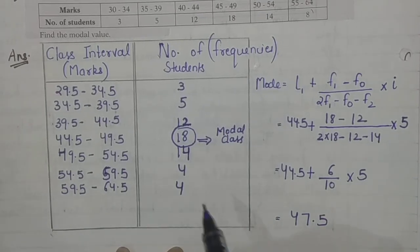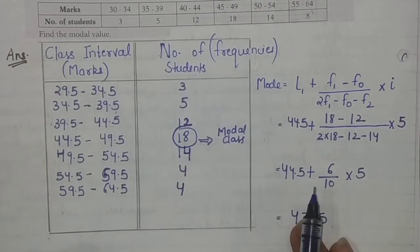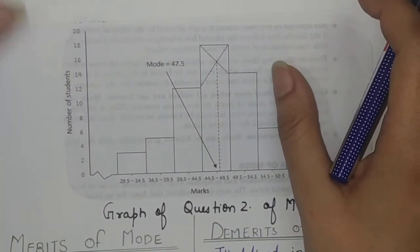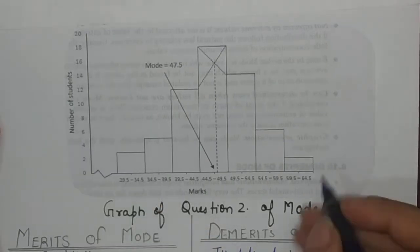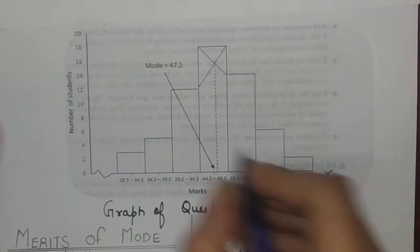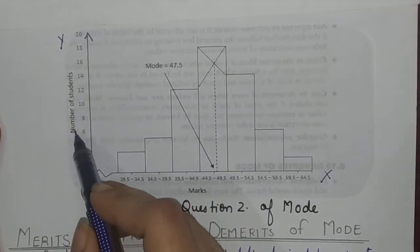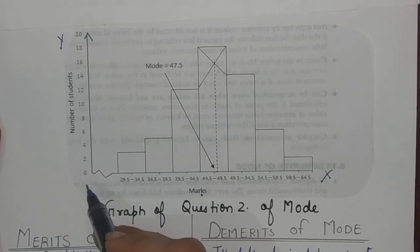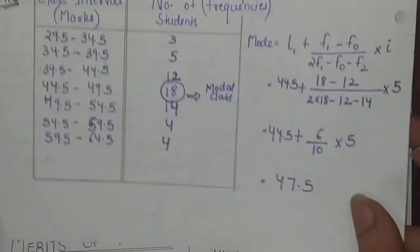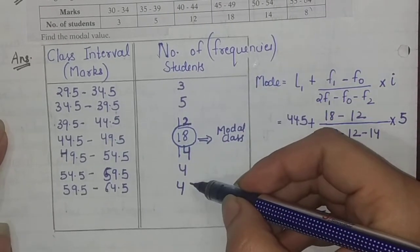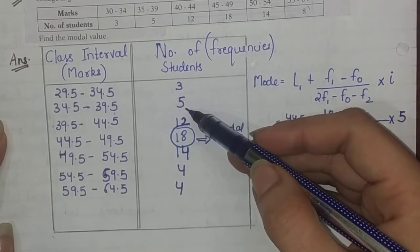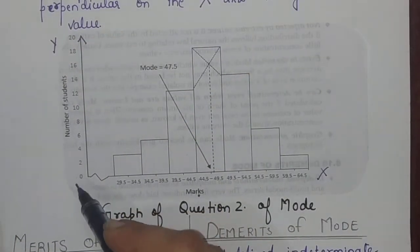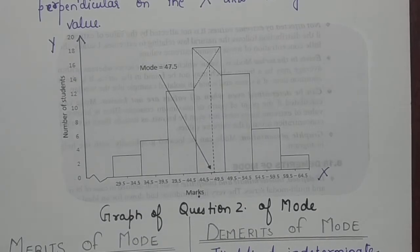Now let's see how to plot this information in the graph. On the y-axis we have the number of students, and on the x-axis we have marks. The frequencies given are 3, 5, 4, 4, 12, 18, so on the y-axis I will take a gap of 2 — meaning I'll mark 2, 4, 6, 8, 10, 12, 14, 16, 18, 20.